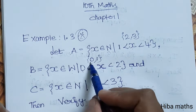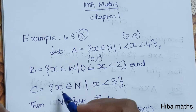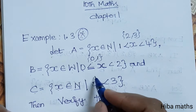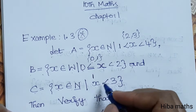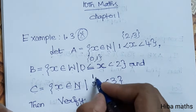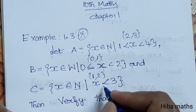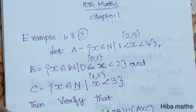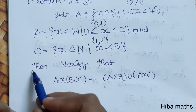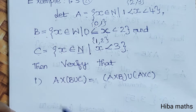Let C be equal to x, where x is an element of natural numbers. Natural numbers start from 1. Where x is less than 3, so less than 3 means x can be 1 or 2. So C = {1, 2}. Now let's verify the 2 subdivisions, one by one.